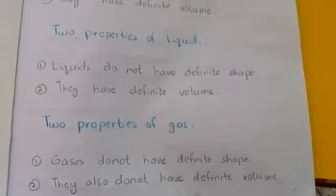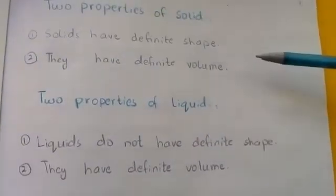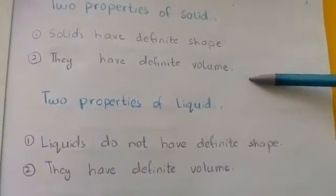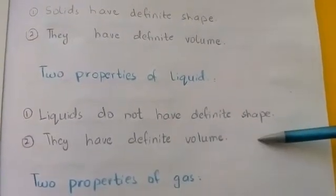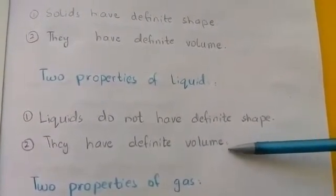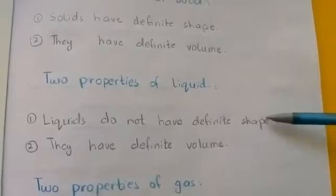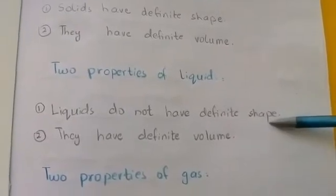Two properties of solid: solids have definite shape and definite volume. You can place them anywhere. Liquids, we know that they have definite volume but they don't have definite shape. When they put in a container, they occupy the shape.